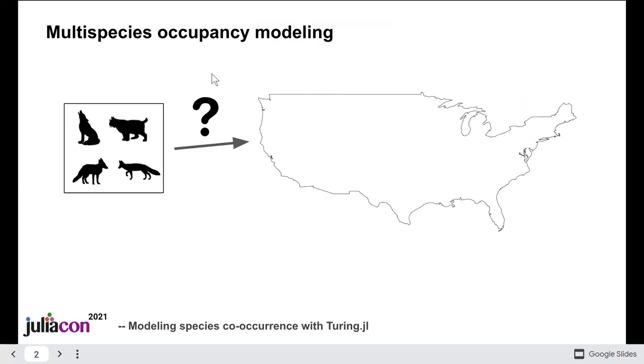As an example, we'll look at multi-species occupancy modeling, which is an essential tool in conservation ecology that tells us where different species occur together in a region and what factors make some locations suitable for them.